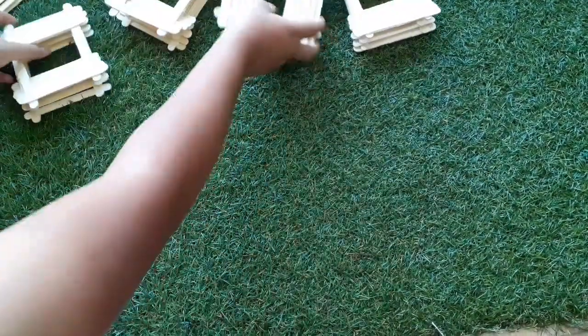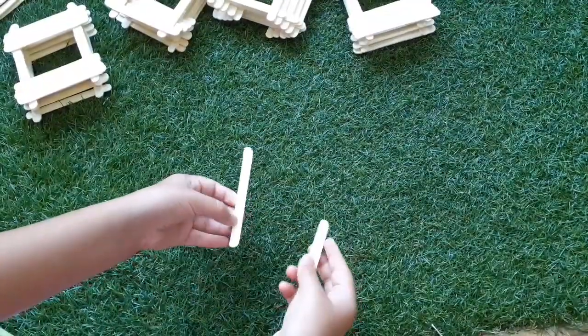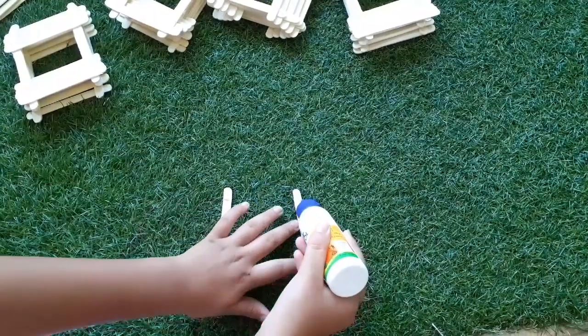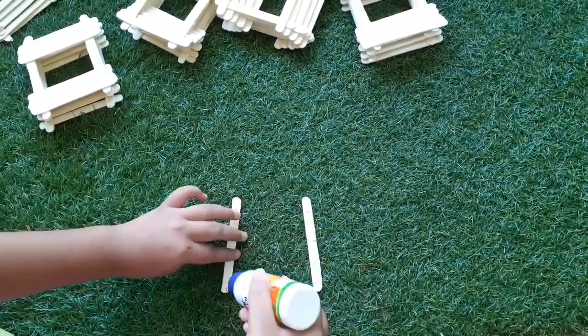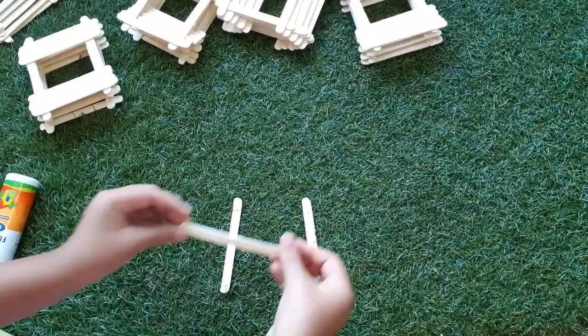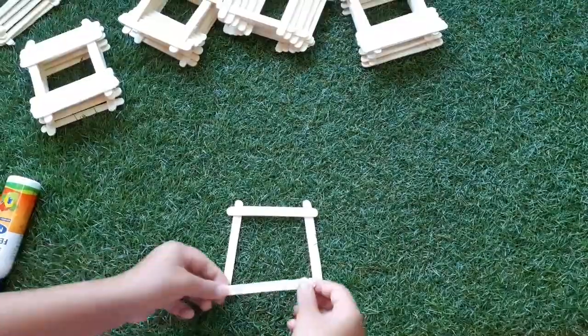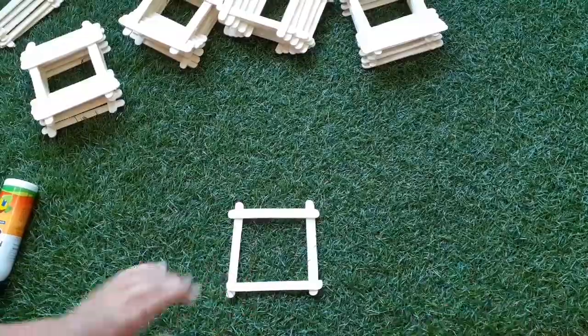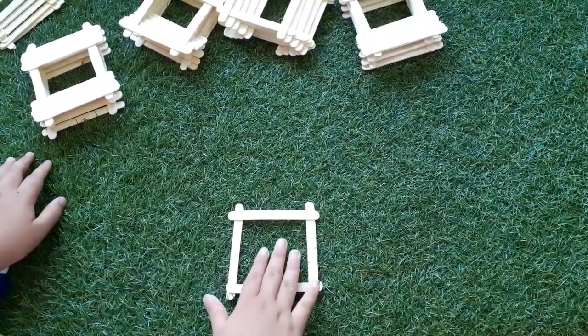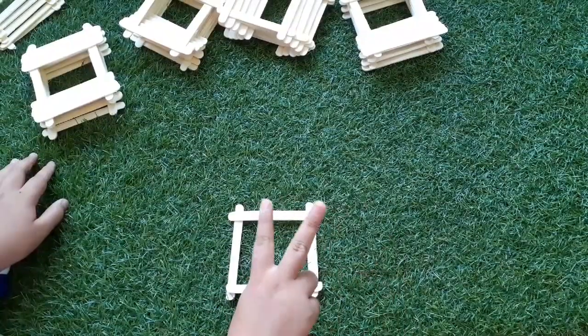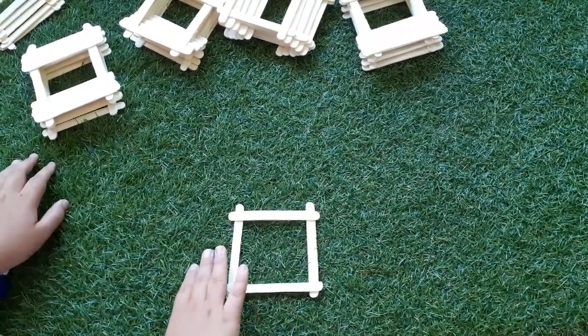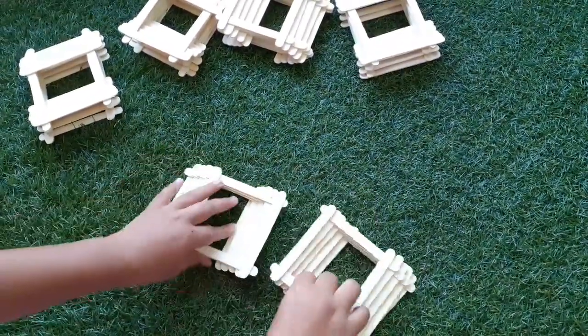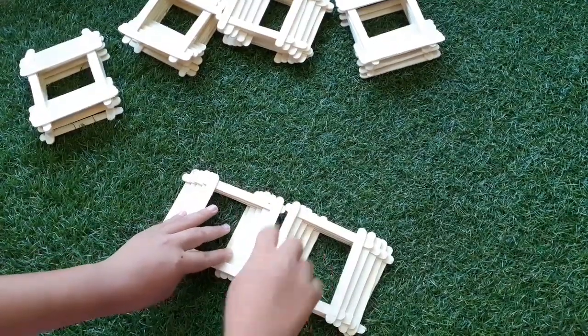Now we will make the base. We will take the ice cream sticks and again repeat the same process like we have done in the first part of making these pieces. In making this square we will just move on to the one side only. Like first we will move on to the right side, and in the second piece we will move on to the left side. So now let me show you how it would look. This is how it is looking. Now we will glue them together.